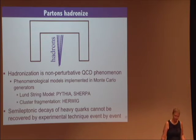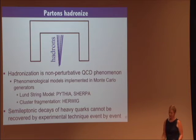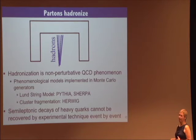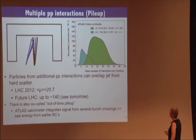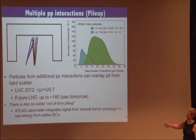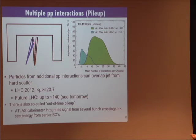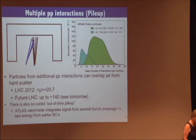During hadronization things happen like a B meson decaying semi-leptonically, producing a neutrino which we can never experimentally recover. So we already get significant resolution degradation just from the hadronization process — the best calorimeter in the world can't fix that. Pileup is another big problem: we have particles from additional proton-proton interactions that by chance can land on top of our jet, causing an offset in our jet energy.